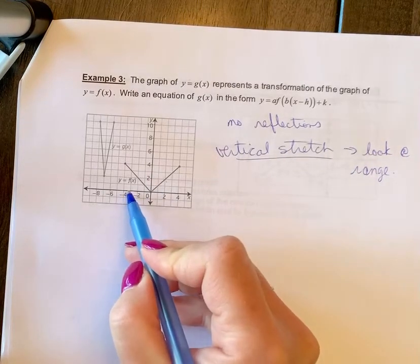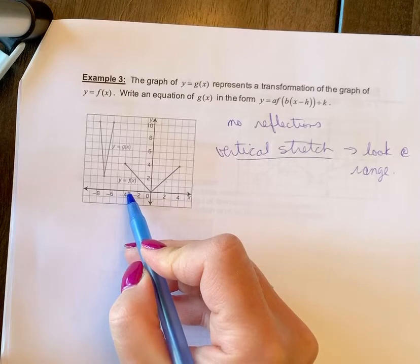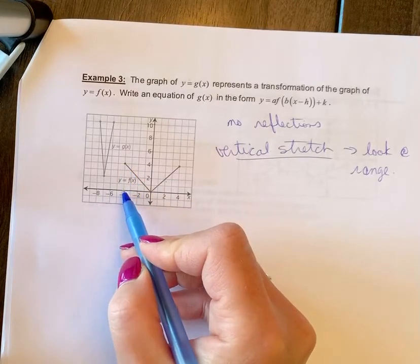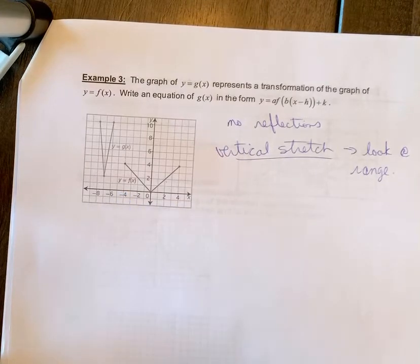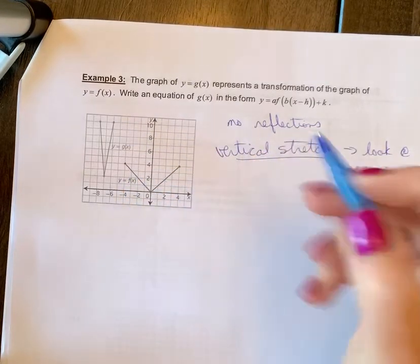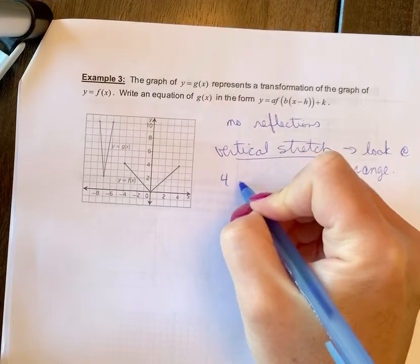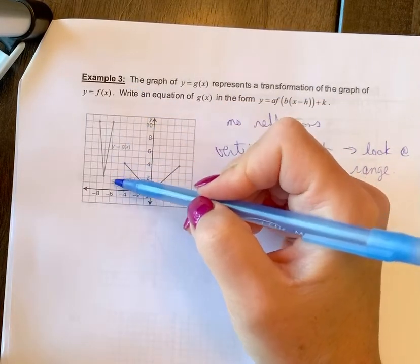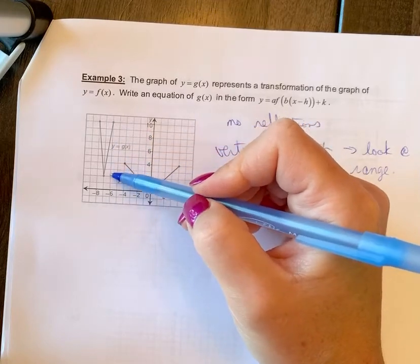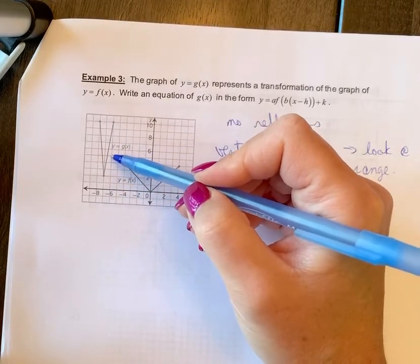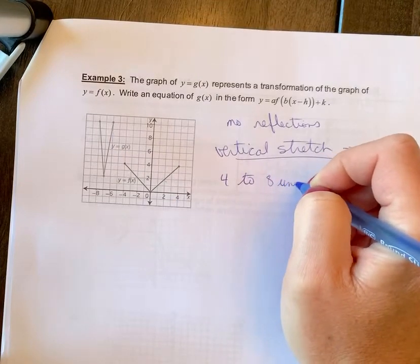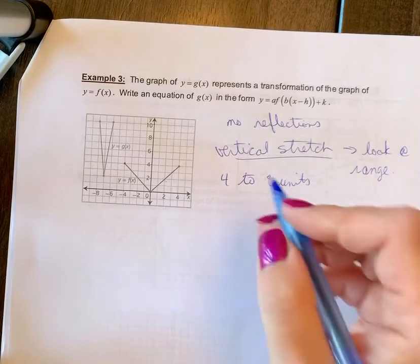So the range of this graph is from 0 to 4. So we don't necessarily need to write the proper range, but let's just look at the distance that it really was. So this was 4 units. So it went from 4, and now it's a distance here of from 2 to 10. So if you count, this is a distance of 8. So it went from 4 to 8 units.